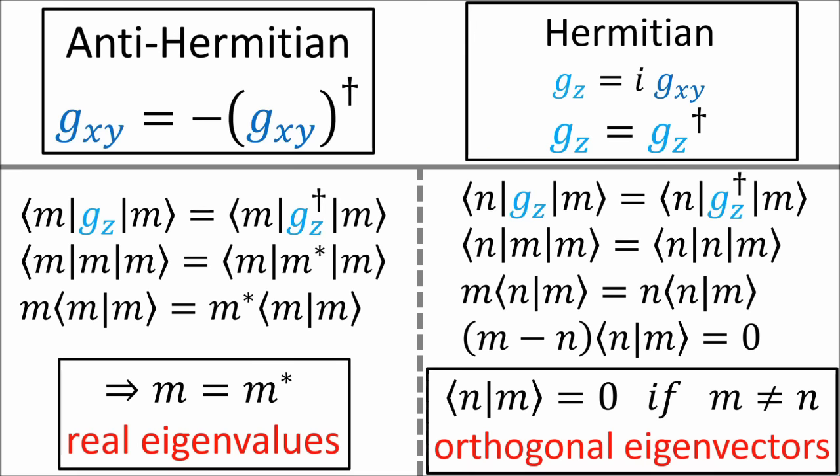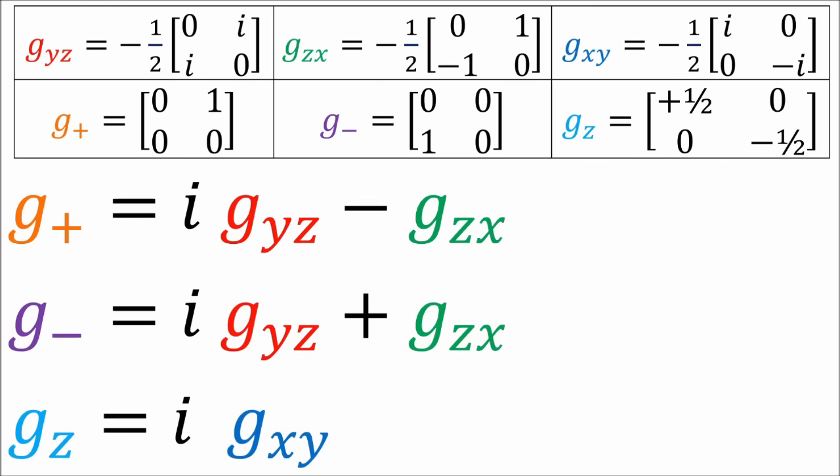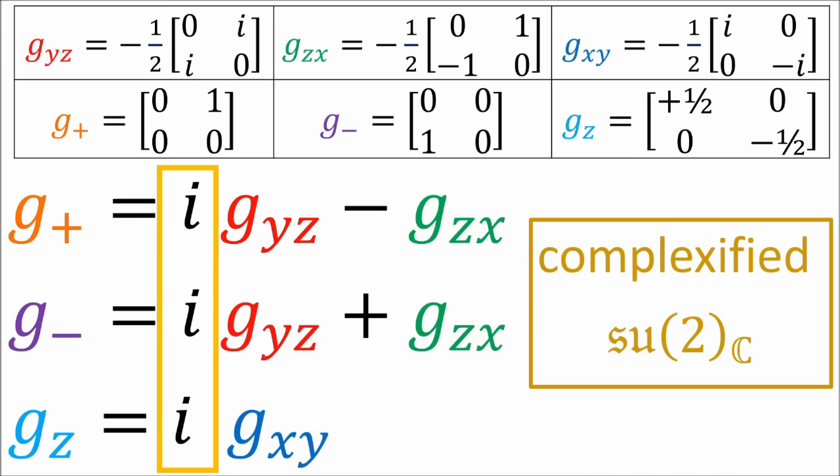Using our original SU2 basis, we've defined three new operators: the raising operator G plus, the lowering operator G minus, and the eigenvalue operator G_Z. Note that since we define these raising and lowering operators using complex coefficients, we are leaving the SU2 Lie algebra and going to its complexified version. Also, since most physics textbooks use Hermitian matrices for the SU2 generators, you might find the definition of these operators look a little different, but they behave the same way.